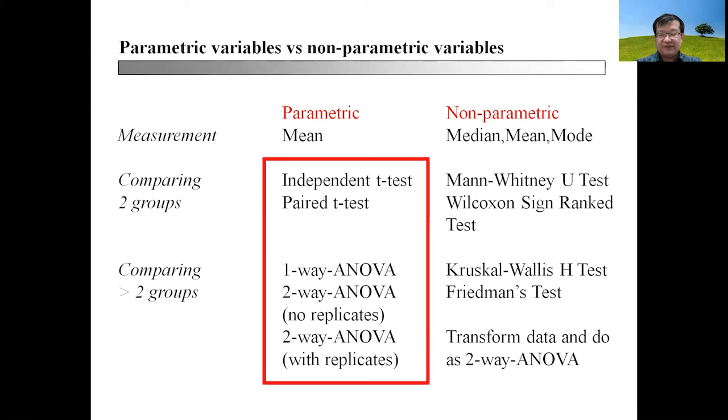As you can see here, there are three columns: description of the measurement methods or analytical method, whether you are talking about parametric data, or non-parametric data. Parametric data can be measured in terms of mean, whereas non-parametric data can be measured and expressed in terms of median, mean, and mode.